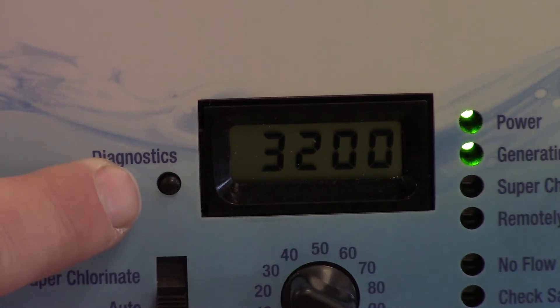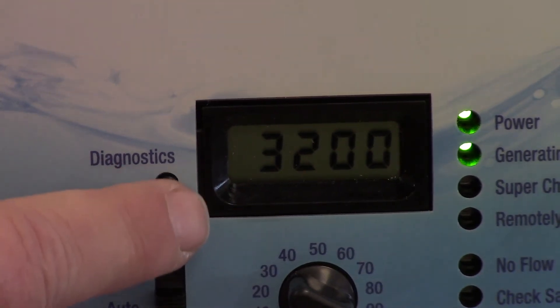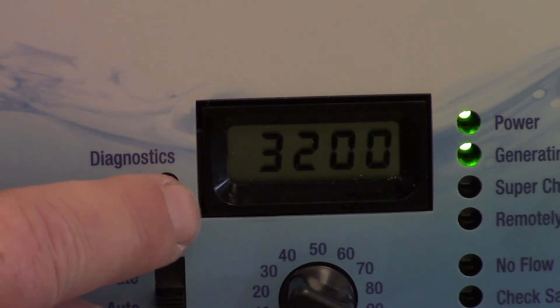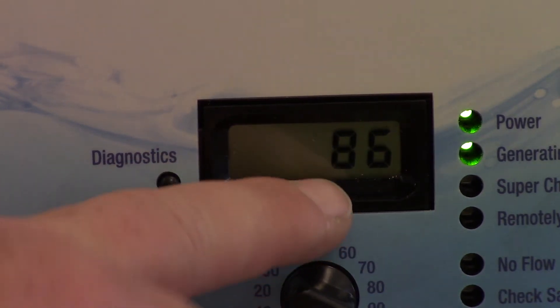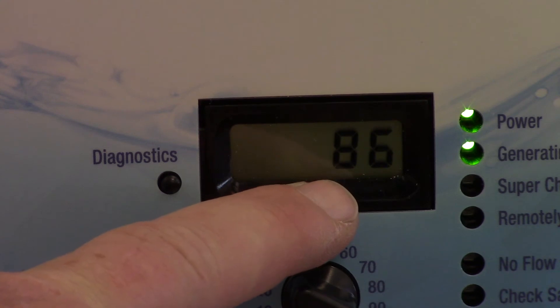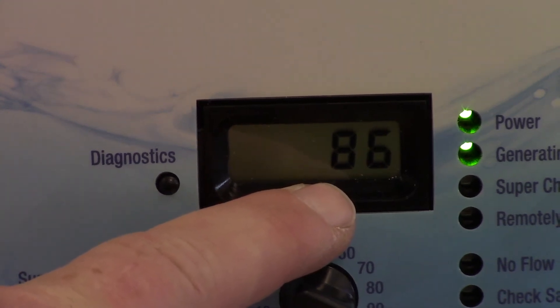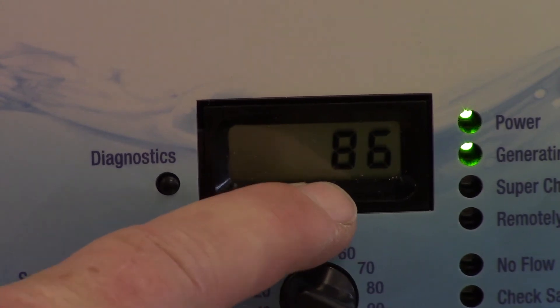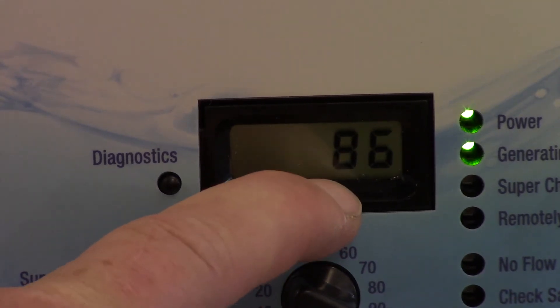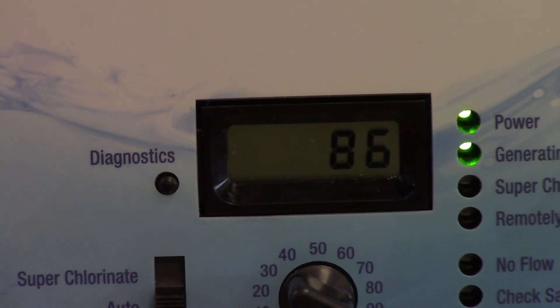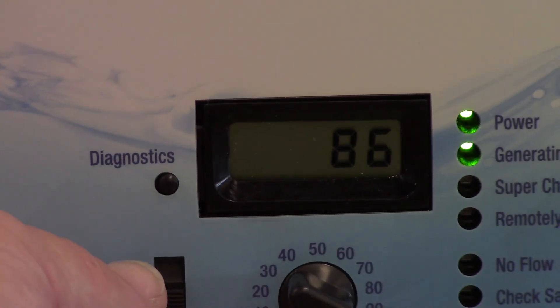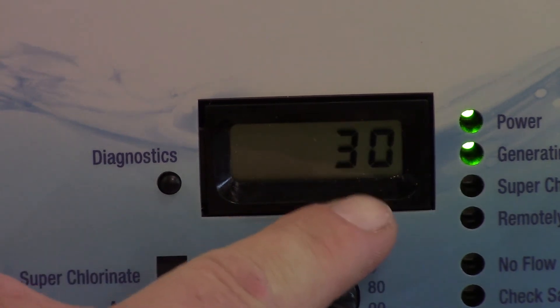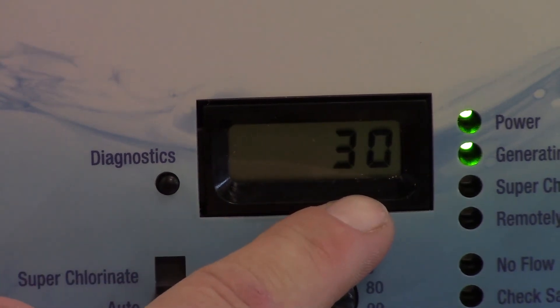Over here we have our diagnostics button. If we push it once the display changes from our average salt reading over 24 hours to the temperature of our swimming pool. Right now it's showing that our pool is sitting at 86 degrees and that temperature is the water actually going through the cell that it's reading. Now if you're not a Fahrenheit person, if you want it in Celsius you switch the selector to super chlorinate and back and you see that it's switched over to 30 degrees Celsius.